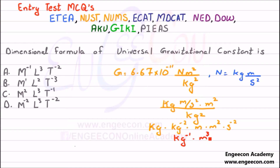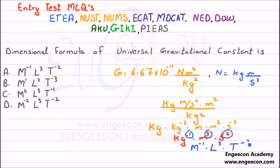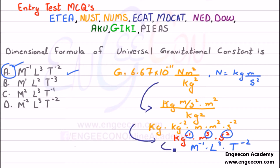The final SI units are kilogram⁻¹, meter³, and second⁻². Converting these into dimension symbols gives M raised to power minus 1, L raised to power 3, and T raised to power minus 2. So option A is the right answer. This explanation covers unit conversion, power conversion, and symbol conversion.